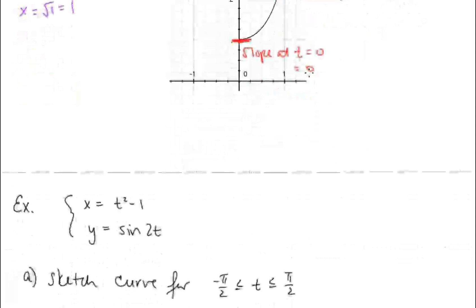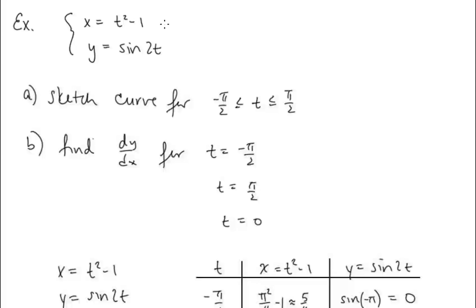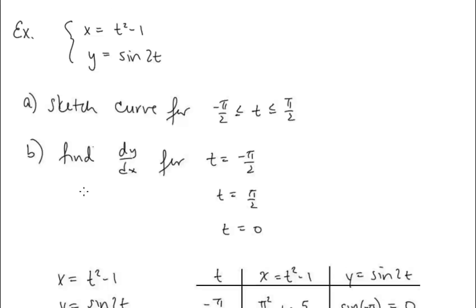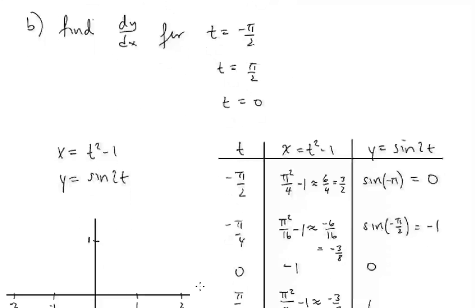Let's take another example. x equals t squared minus 1, y equals sine 2t. We want to sketch the curve for t between negative pi over 2 and pi over 2, and find the derivative dy/dx at t equals negative pi over 2, t equals pi over 2, and t equals 0. To sketch, we start with a table of data, incrementing in pi over 4 units.